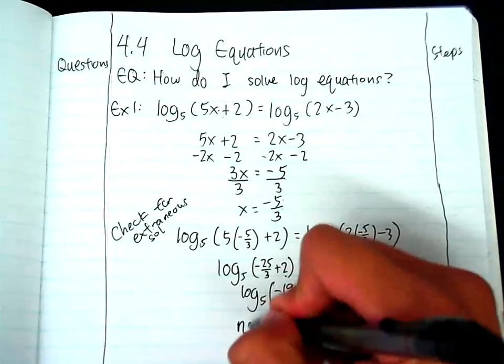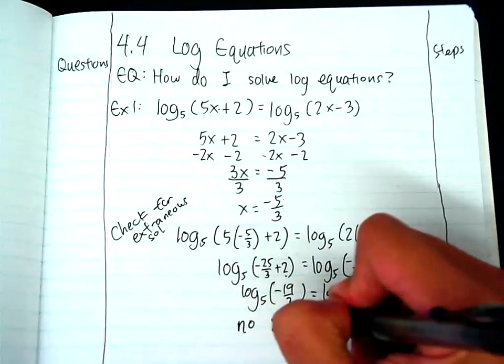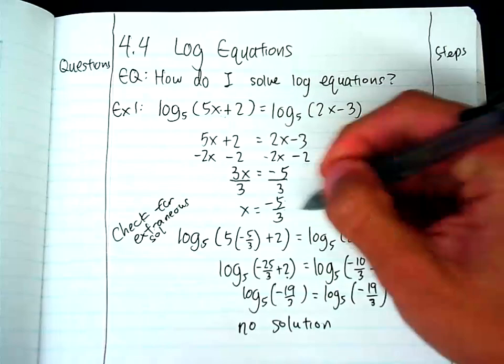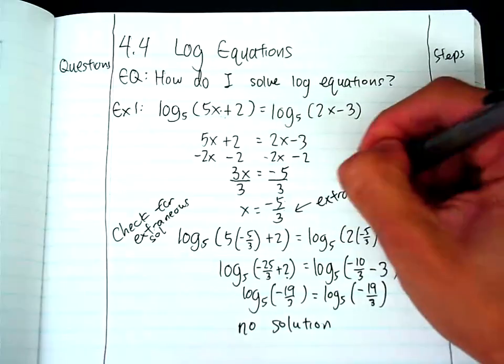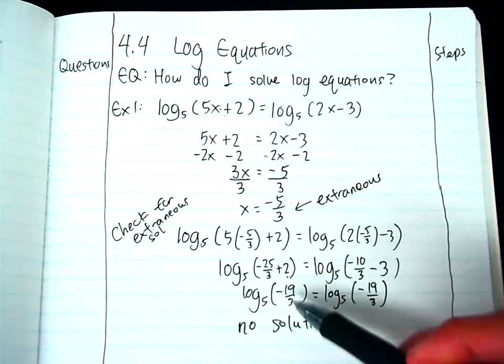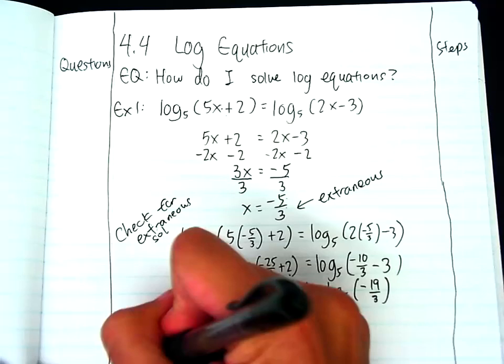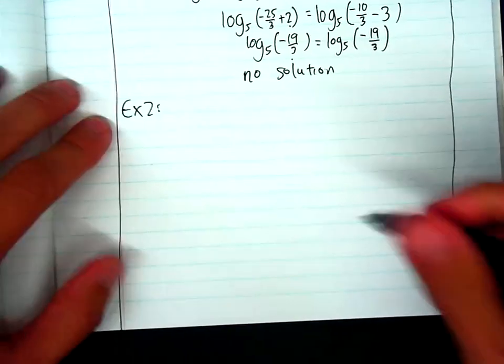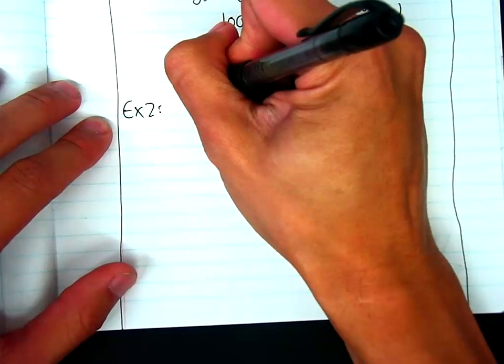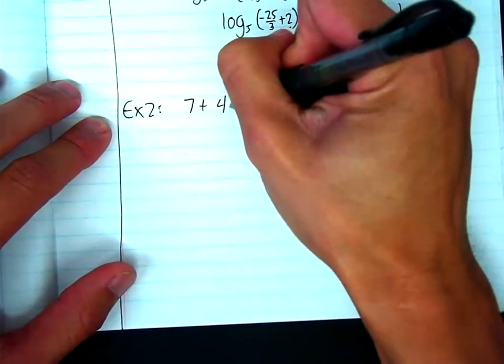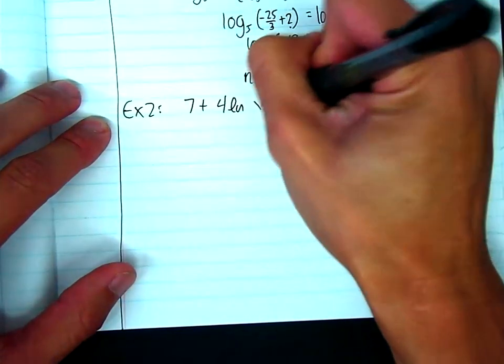So there will be no solution. Negative 5 thirds is actually extraneous. So just make sure you don't get a negative value in here, and it should work out fine. Okay, so let's do example 2. Example 2 will be 7 plus 4 natural log of x equals 6.